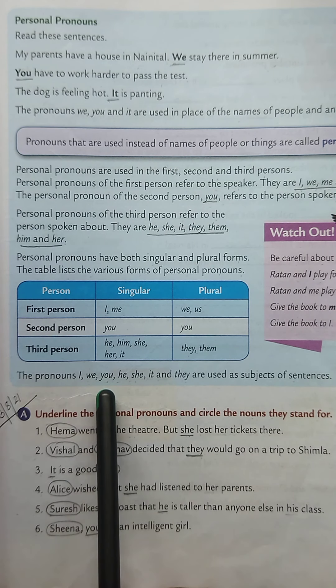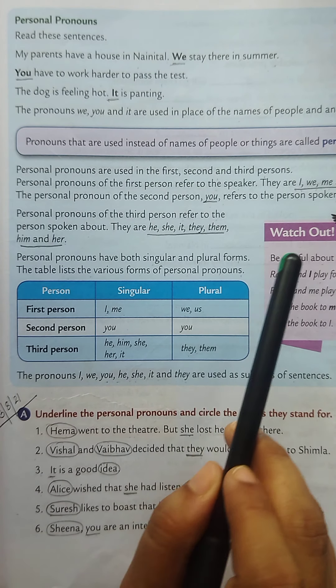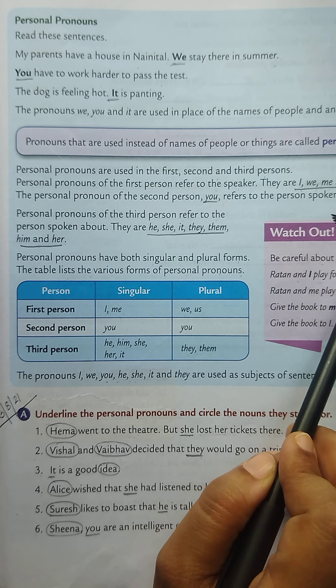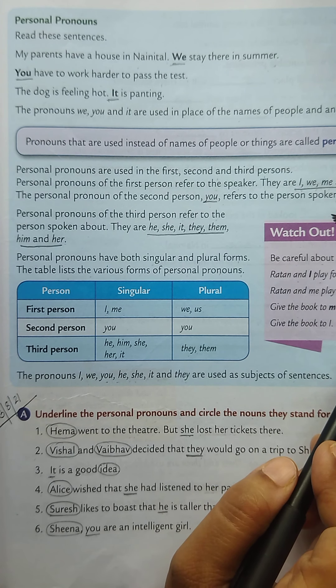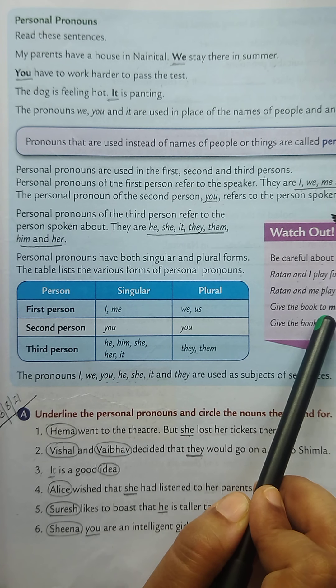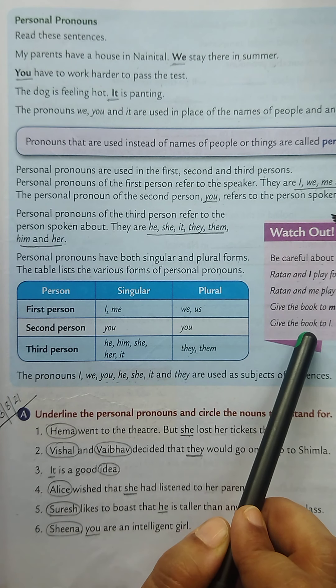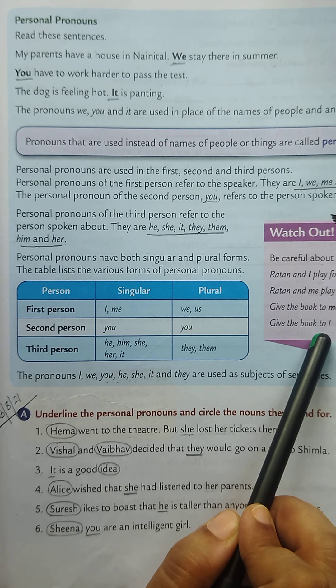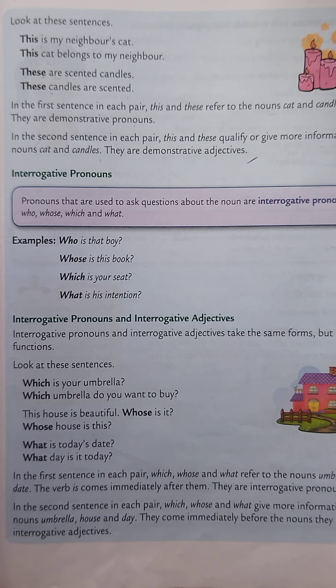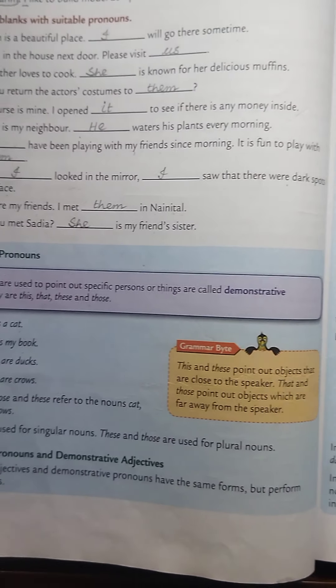The pronouns I, we, you, he, she, it, and they are used as subjects of sentences. Watch out — be careful about the use of I and me. 'Ratan and I play football together' is correct, but 'Ratan and me play football together' is incorrect. 'Give the book to me' is correct, but 'Give the book to I' is incorrect. So we have to use the pronouns I and me carefully.